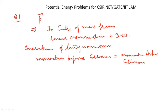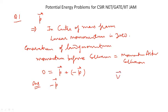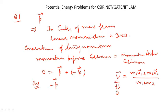In the center of mass frame, the total linear momentum is zero. From conservation of momentum, momentum before collision equals momentum after collision. Before collision the total is zero, so if one particle has momentum p after collision, the other must have momentum -p, so that the total remains zero. The answer is -p. Remember that the velocity of the center of mass is (m₁v₁ + m₂v₂)/(m₁ + m₂), so in the center of mass frame v = 0.